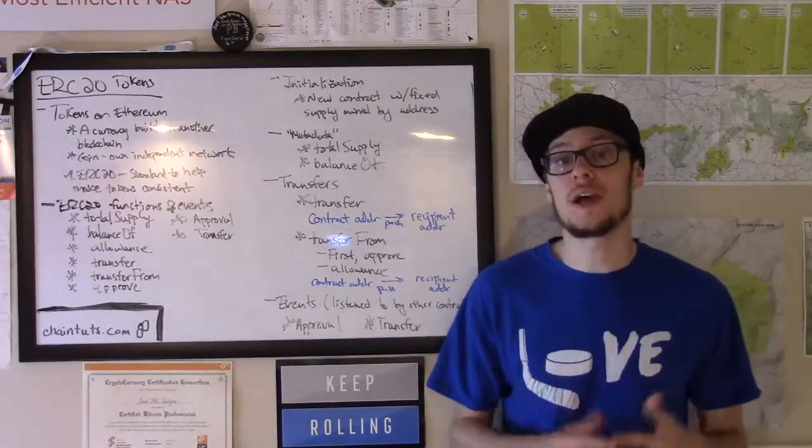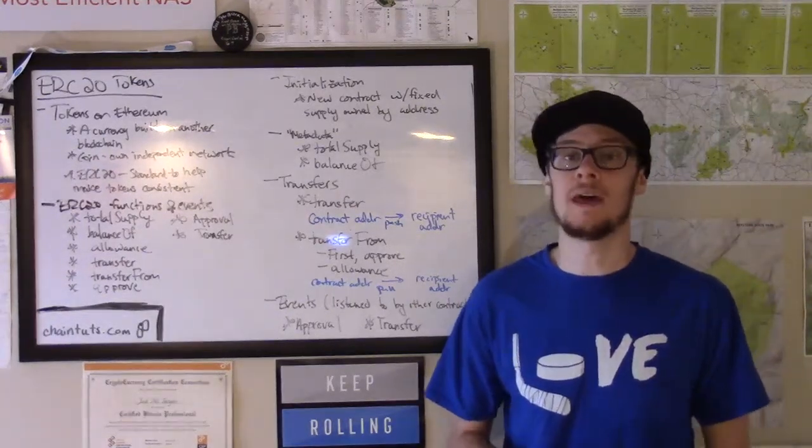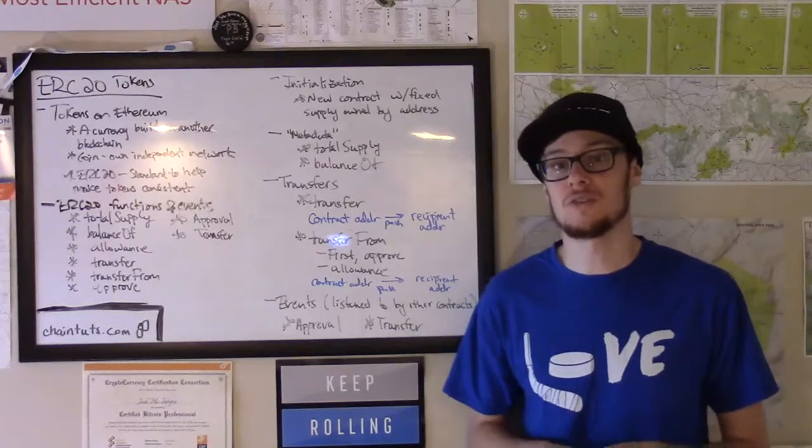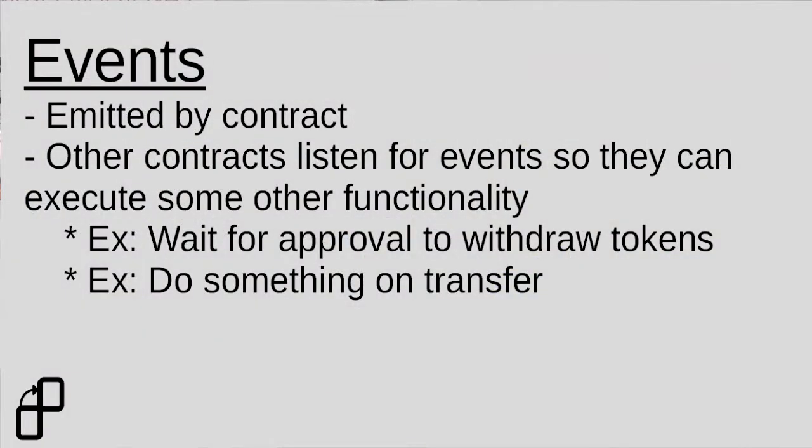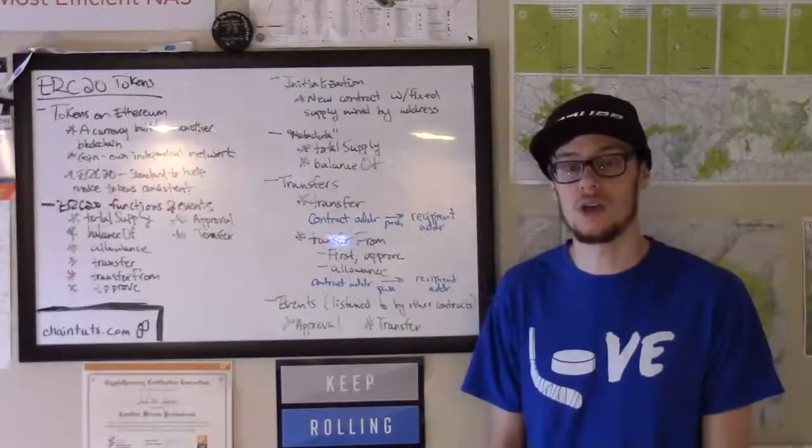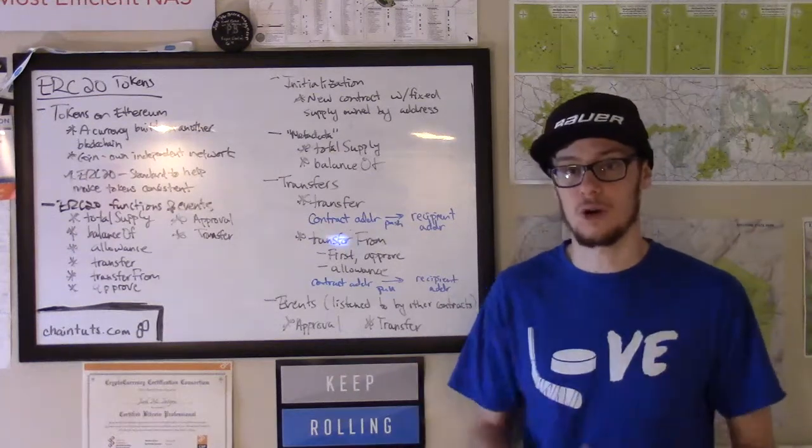Now there are two types of events that can be emitted by the smart contract functions. And what that allows is it allows other smart contracts on the Ethereum network to react to these events occurring and do something else interesting. There is an approval event that is done when a new spending address is given an allowance to withdraw a certain amount of tokens. And there is a transfer event that occurs when some transfer of tokens occurs on this smart contract.